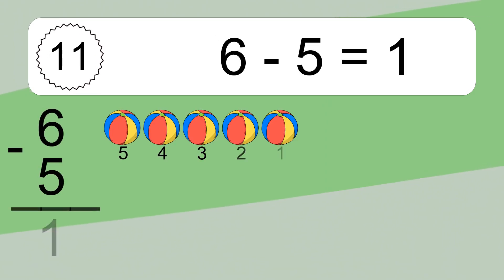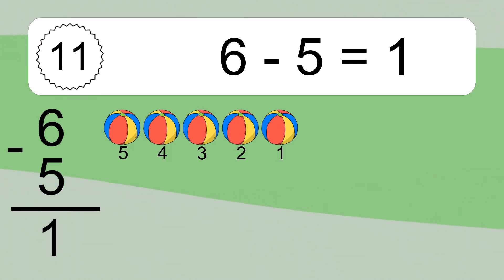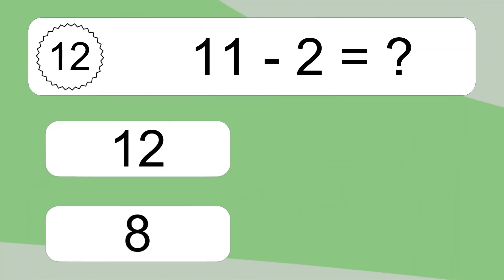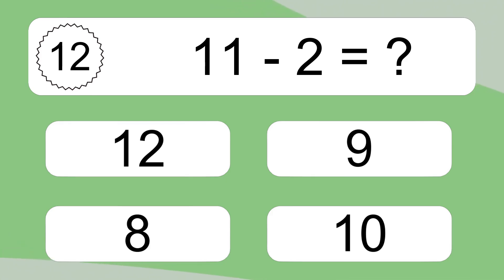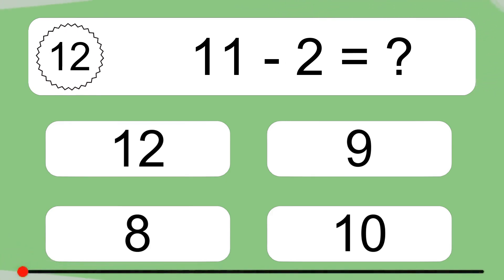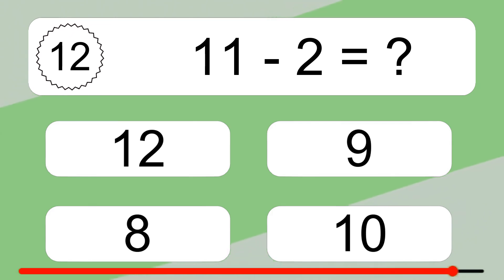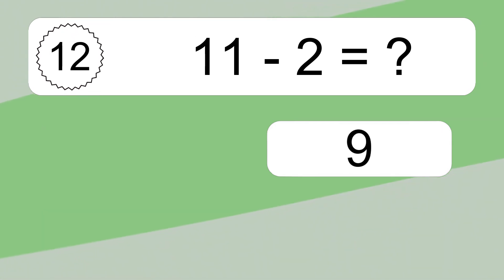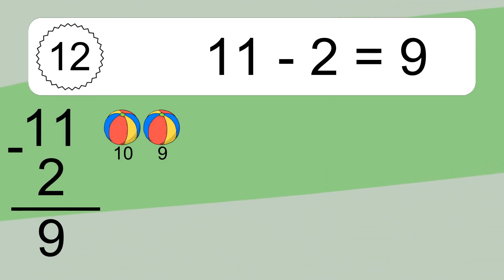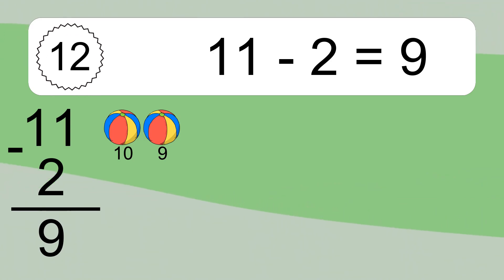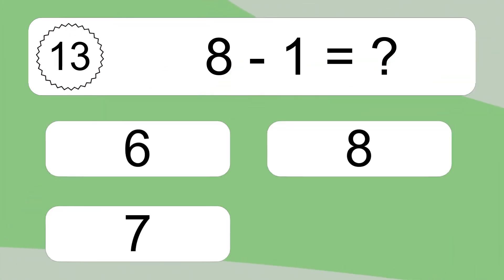6 minus 5 equals what? 6 minus 5 equals 1. Let's count it: 5, 4, 3, 2, 1. 11 minus 2 equals what? 11 minus 2 equals 9. Let's count it: 10, 9.